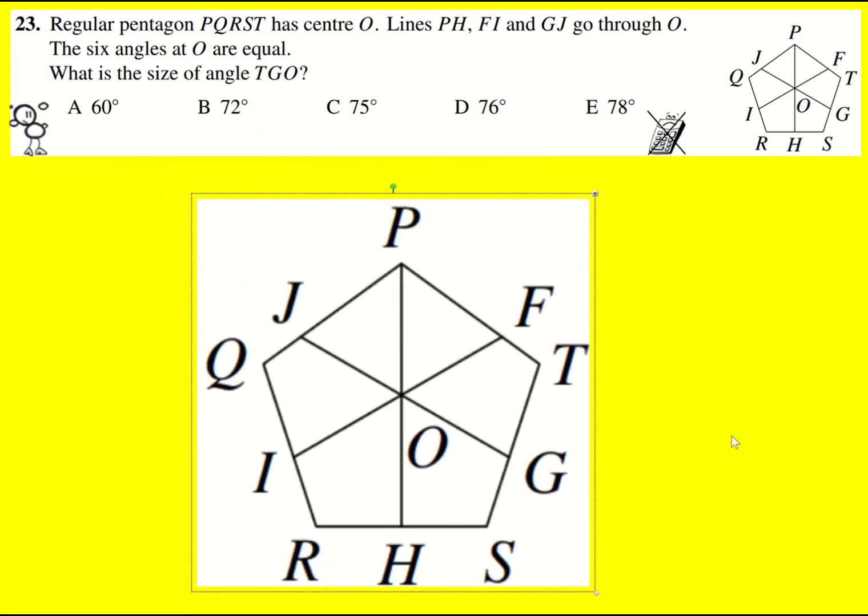It actually took quite a long time to solve this question. I missed one detail that was really useful. The first thing you've got to realize is that all of these are going to be 60, so you can label them all 60. I'm just going to label a couple of them 60. And we're interested in TGO, so that is that angle there, so I'm going to call that X.